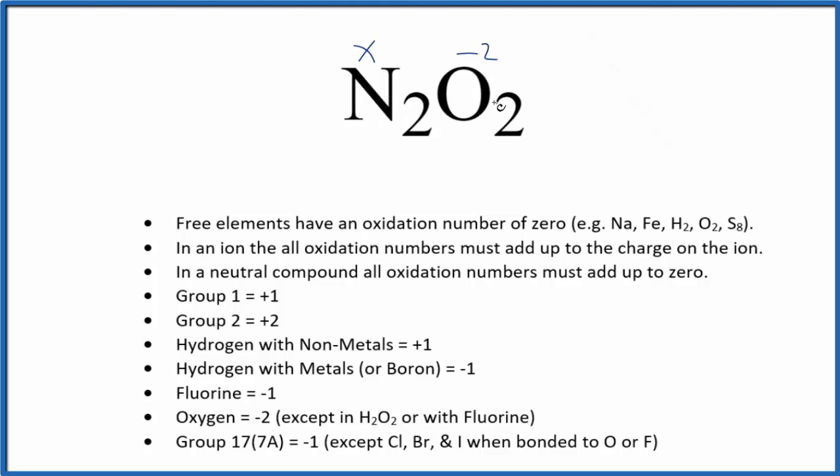So you can kind of just figure this out by looking at it. We have a negative 4. That means that the nitrogen is going to have to be a positive 2. Positive 2 times 2 is a positive 4. Then we have our negative 4. All that would add up to zero.